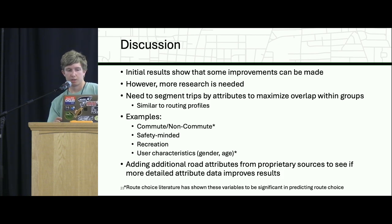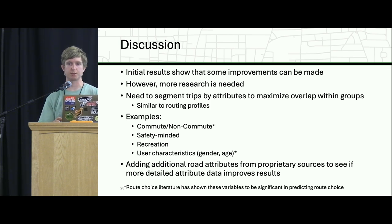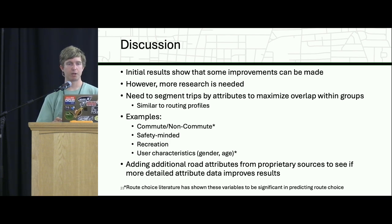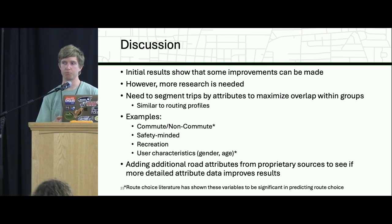For discussion: our initial results show some improvements can be made, but more work is needed. My next step is really going to be segmenting these trips — we have additional attributes such as user characteristics and trip purpose that we'll use to aid this process. You might think of this as similar to routing profiles: for example, a commute option that's a little more direct but still safety-conscious, a non-commute option that's more safety-conscious, one that's totally safety-focused, and a recreation option where the rider isn't concerned about going out of their way and wants to find parks.